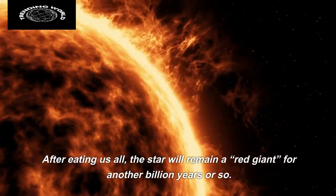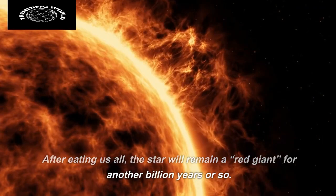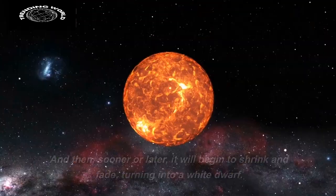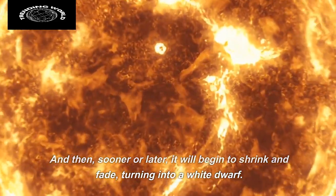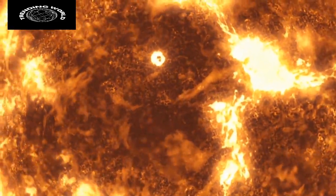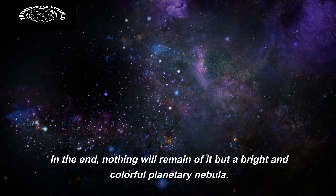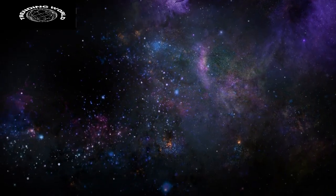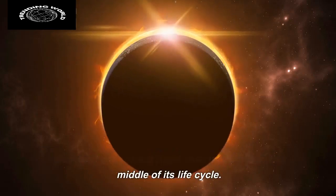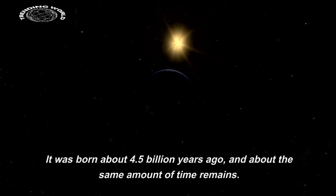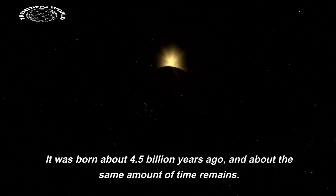After eating us all, the star will remain a red giant for another billion years or so. And then, sooner or later, it will begin to shrink and fade, turning into a white dwarf. In the end, nothing will remain of it but a bright and colorful planetary nebula. But don't get scared. Right now, the sun is in the middle of its life cycle. It was born about 4.5 billion years ago, and about the same amount of time remains.